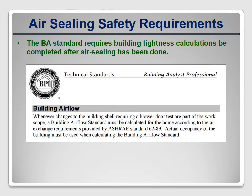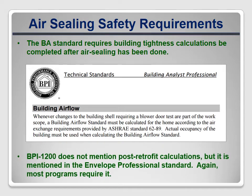The BA standard also requires that building tightness calculations be completed after retrofits to determine if mechanical ventilation is necessary. BPI-1200 doesn't mention repeating the ventilation calculations after retrofits; however, it is mentioned in the envelope standard, and again, most programs require it.